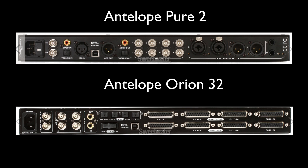Let's take a look at how to connect a D to A or A to D converter to your interface. With this example I've got the back of the Antelope Pier 2, which is their mastering two-channel A to D / D to A converter, and the back of the Antelope Orion 32, which is their 32-channel converter. To connect them, things you're going to need are digital cables — an AES cable, ADAT cable, or SPDIF cable.